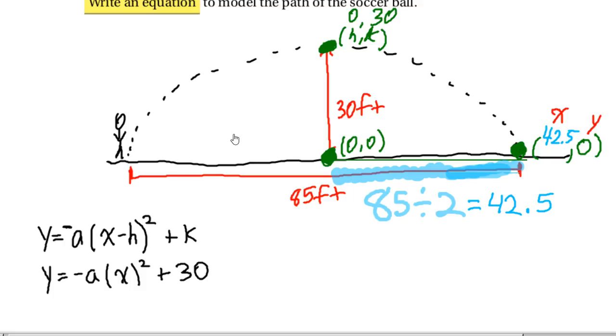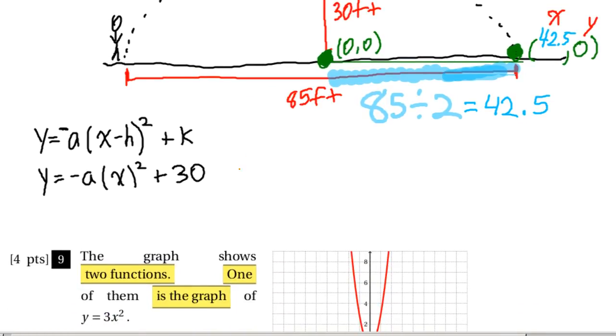So now I can say, if I take these and plug these in, this is going to turn into 0 for y is equal to negative a times 42.5 squared plus 30.